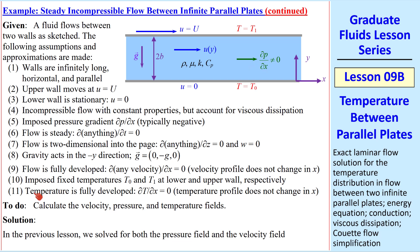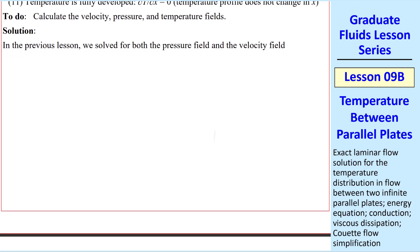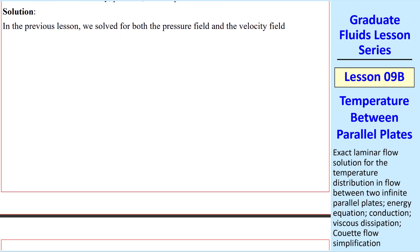These were our assumptions and approximations. We wanted to calculate the velocity, pressure, and temperature fields. In the previous lesson, we solved for both the pressure and velocity fields. We had for pressure, P of xy equal negative rho gy plus x del P del x plus a constant. We called this equation 3.